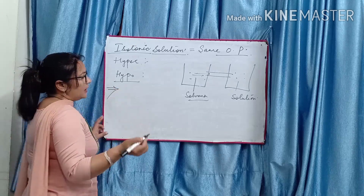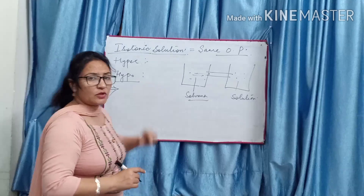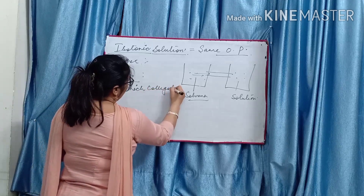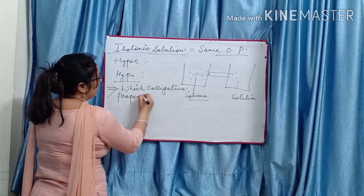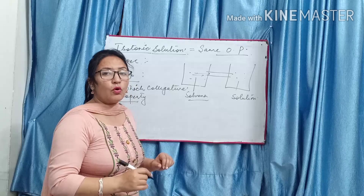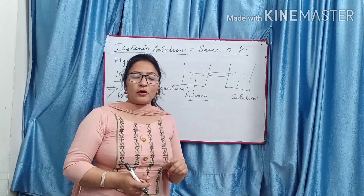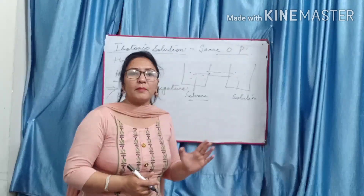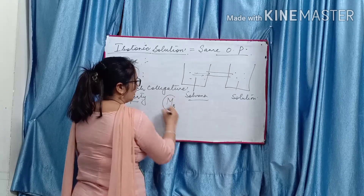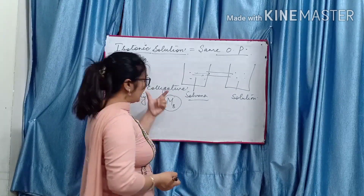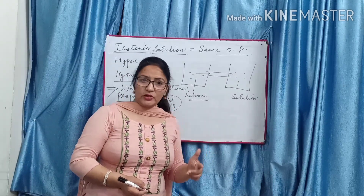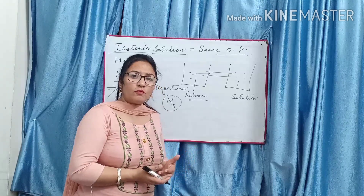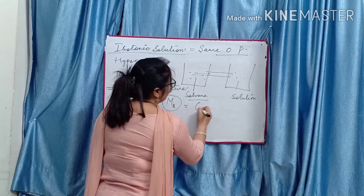An important question: which colligative property is preferred for the determination of molar mass of solute? In colligative properties we use molar mass. There are four colligative properties: relative lowering, elevation in boiling point, depression in freezing point, and osmotic pressure. The best colligative property for determination of molar mass of micromolecules is osmotic pressure.